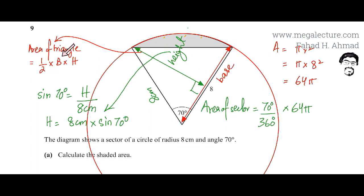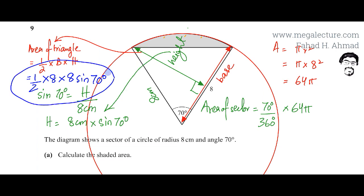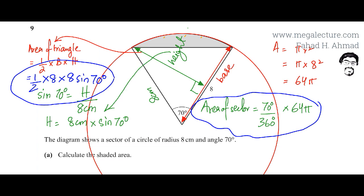Using the formula, I can now calculate the area of the triangle: it's half times base times height, which is half times 8 times 8 sine 70 degrees. So it's half into 8 into 8 sine 70 degrees. We've now found the area of the white triangle and also the area of the bigger sector.